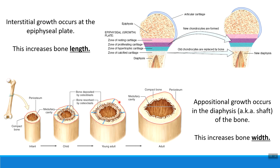At the same time, bone-breaker cells called osteoclasts are resorbing or breaking down bone tissue in the middle of the bone. So I add bone tissue to the outside and get rid of bone tissue on the inside. As this continues, the diaphysis gets much wider on the outside and the medullary cavity, that open space in the middle, expands as well.